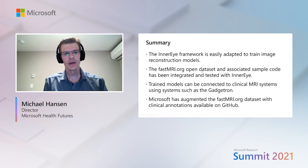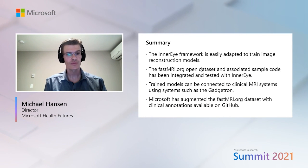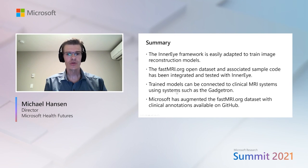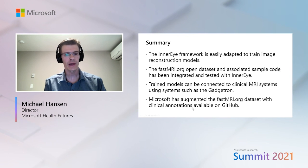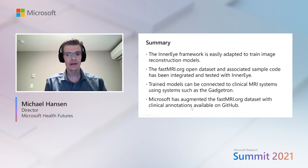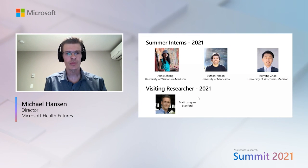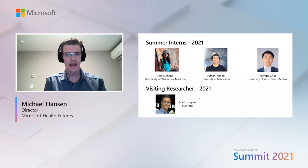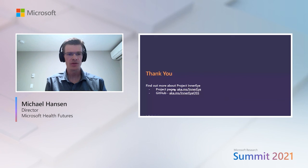To sum up: training image reconstruction models with MRI is relatively straightforward using our framework. We have end-to-end tested the fastMRI dataset and associated sample code, which you can use directly. We can take these trained models and connect them to real clinical MRI systems, and we've augmented the fastMRI dataset with clinical annotations available on GitHub if you want to evaluate how these models perform. A lot of this work was performed by interns and visiting researchers, and I want to thank them for their contributions. Thank you for your attention — please check the links for more about the InnerEye Toolbox.